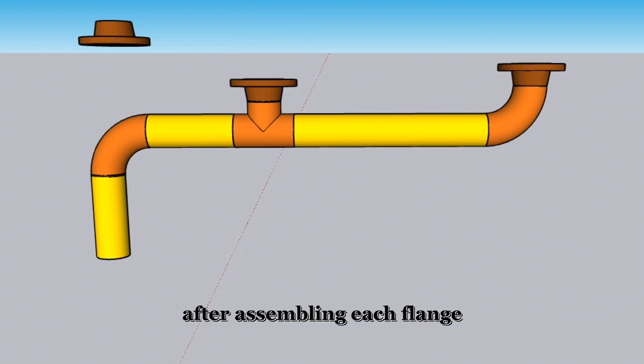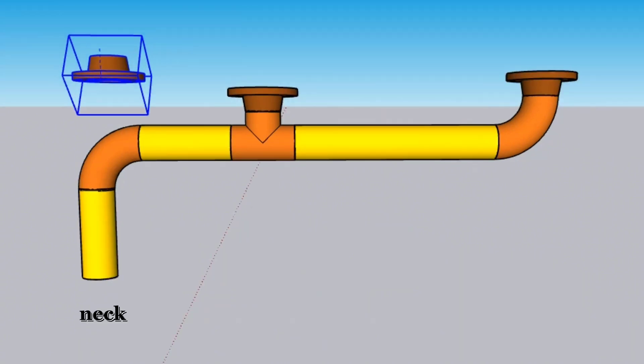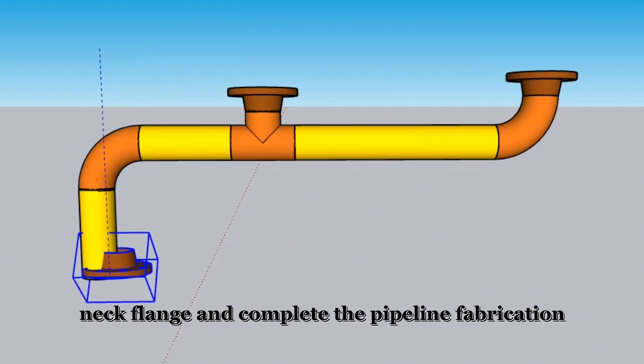After assembling each flange, we are checking the smoothness of the pipe spool. Finally, we install the last welding neck flange and complete the pipeline fabrication.